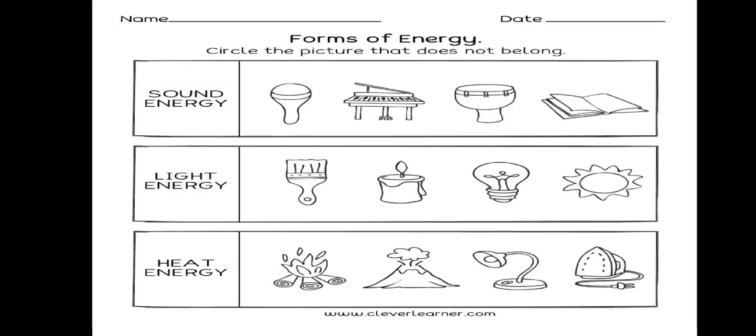Now let's solve this activity — circle the picture that doesn't belong. For sound energy, the book doesn't belong because no sound comes from it. For light energy, the candle, lamp, and sun all produce light, so the painting tool is the one that doesn't belong.